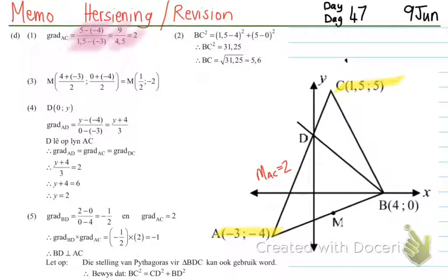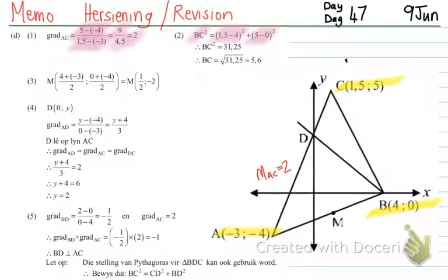Number 2 asks: determine the length of BC to one decimal place. So I have to determine the length of BC. I'm going to use the coordinates of B and C. For the distance, I use the distance formula: BC squared equals the x values subtracted squared plus the y values subtracted squared. So it's 1.5 minus 4 squared plus 5 minus 0 squared, giving BC squared equals 31.25. Taking the square root, BC is 5.6.